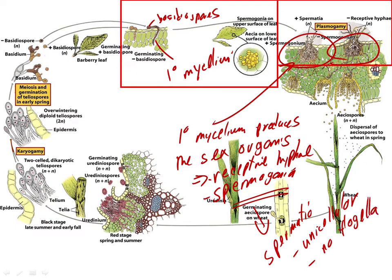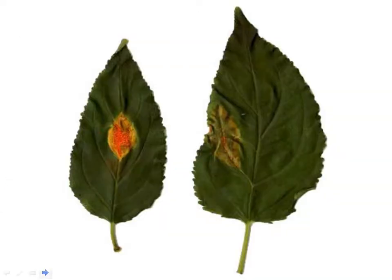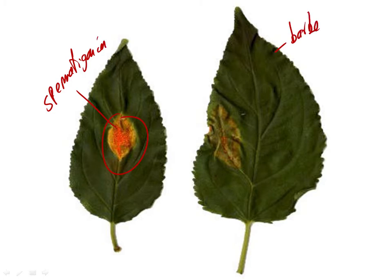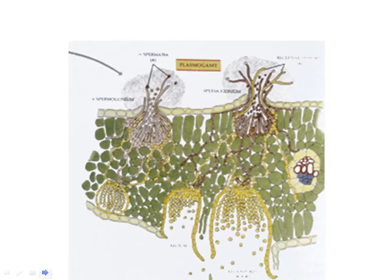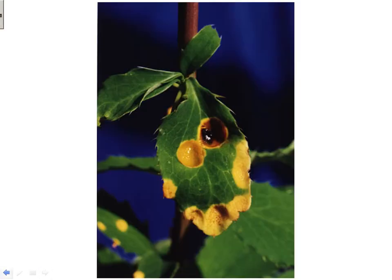The spermatia are unicellular and have no flagella, so we can't call them sperm, but they function kind of like sperm — they're going to fuse with the receptive hyphae. The spermagonia look different in different races of the organism.